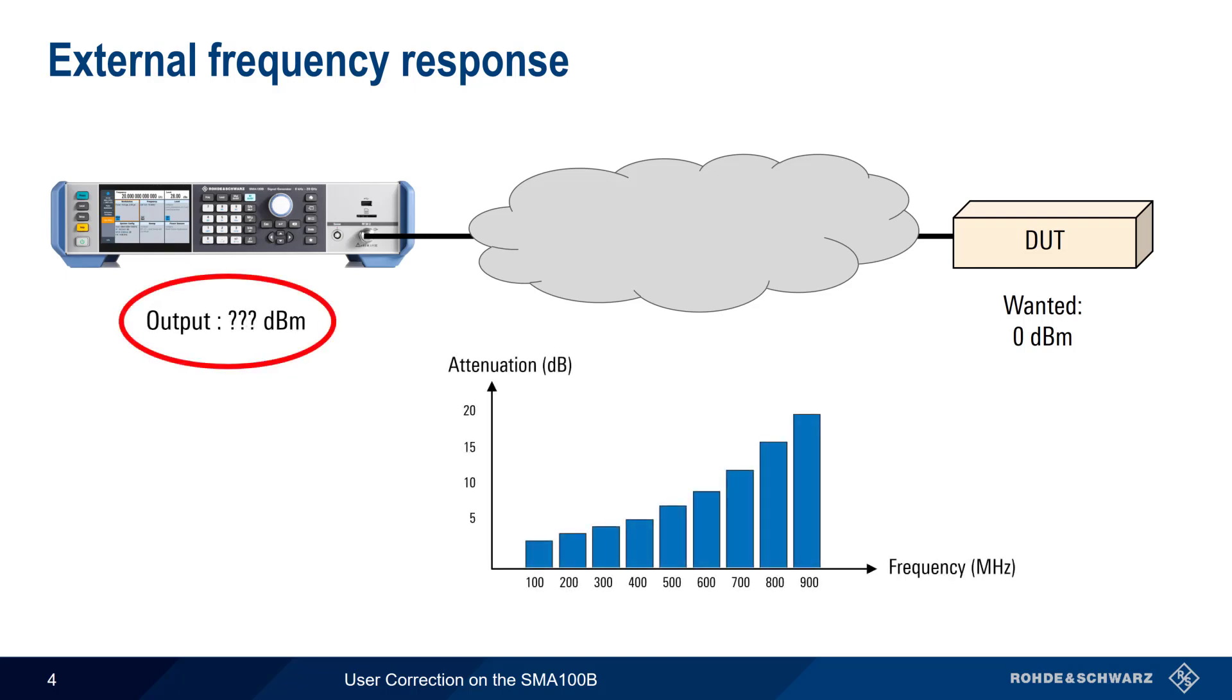What power level do we set on our generator for a given frequency? We could try to calculate and set this manually, but the more accurate and efficient way of compensating for this external frequency response is using something called user correction.